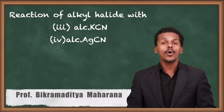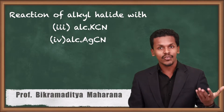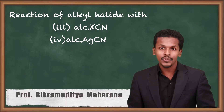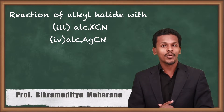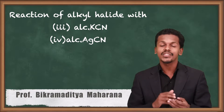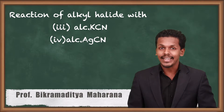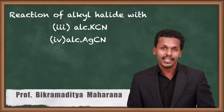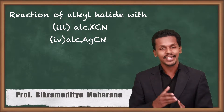in the previous lecture we got to know about the reaction of alkyl halide with aqueous KOH as well as moist Ag2O solution. Now we are going to talk about the next chemical property of alkyl halide — the reaction of alkyl halide with potassium cyanide, alcoholic potassium cyanide, and alcoholic AgCN (silver cyanide). Let us talk about it.